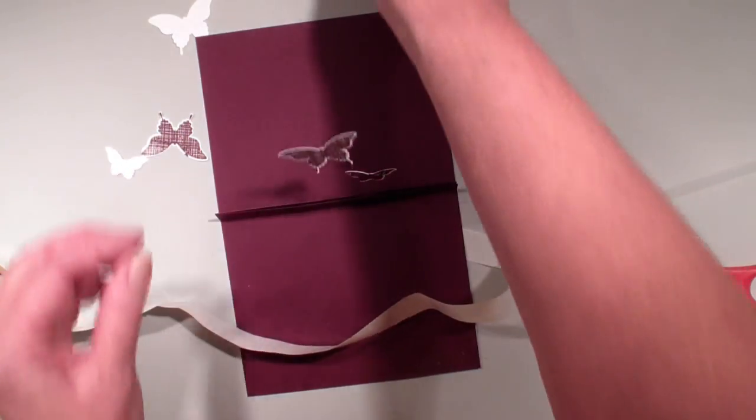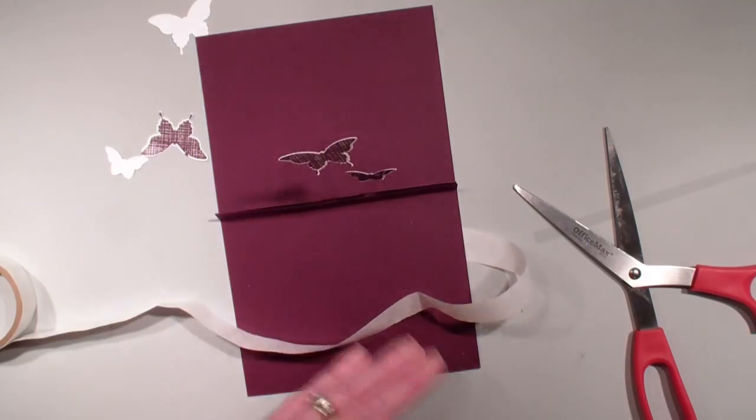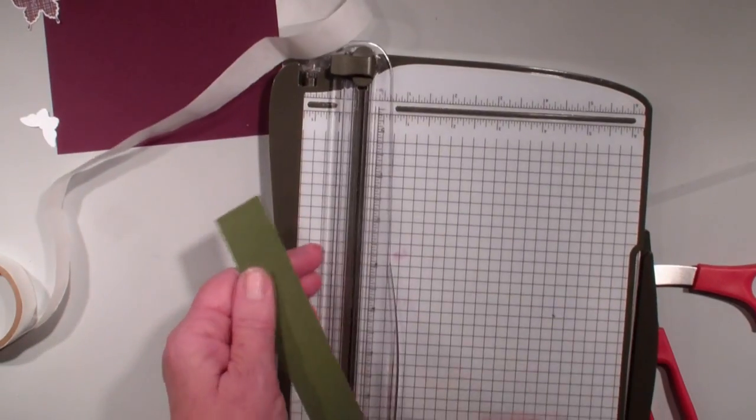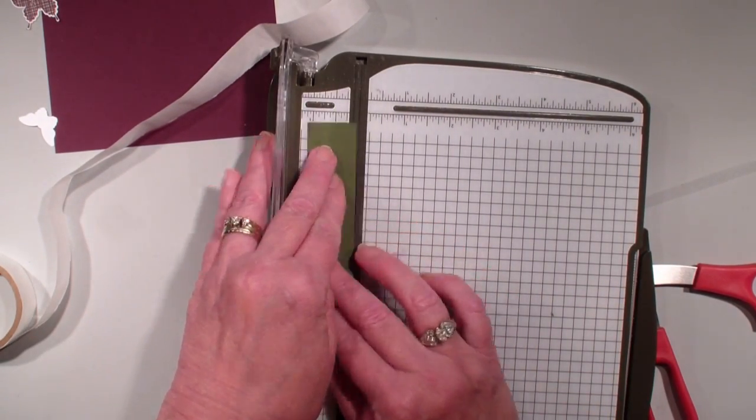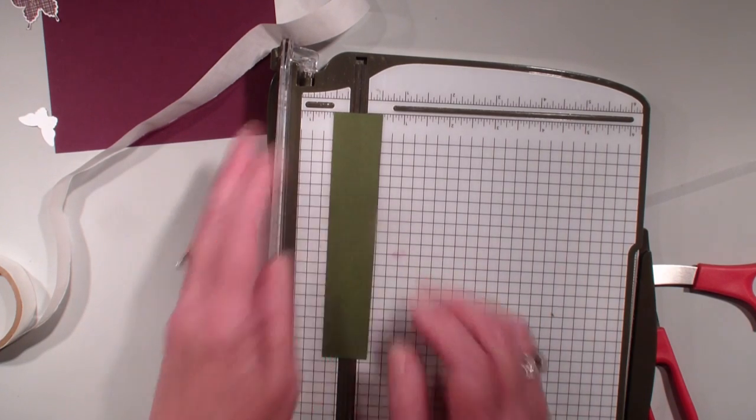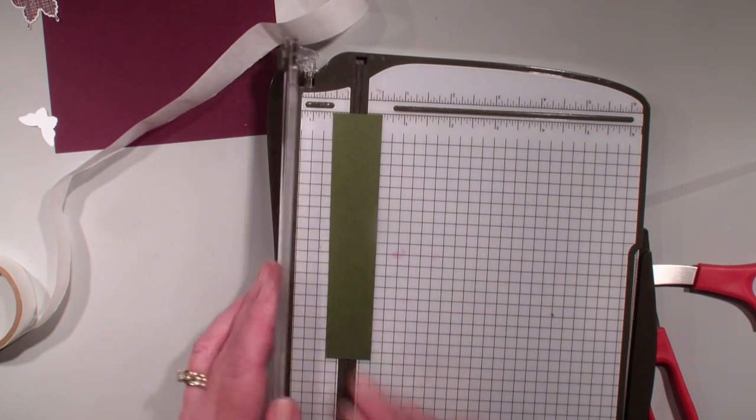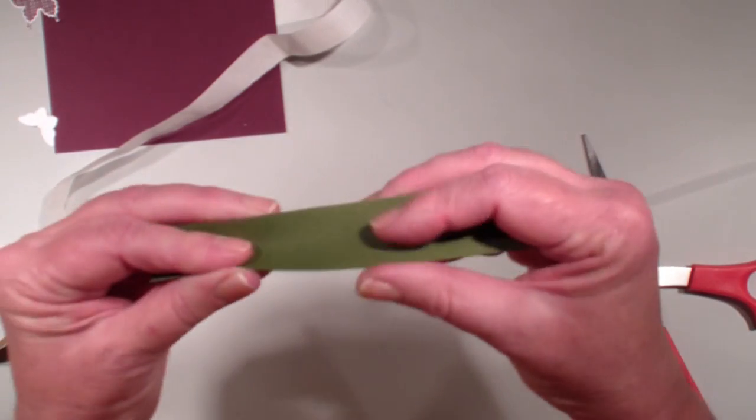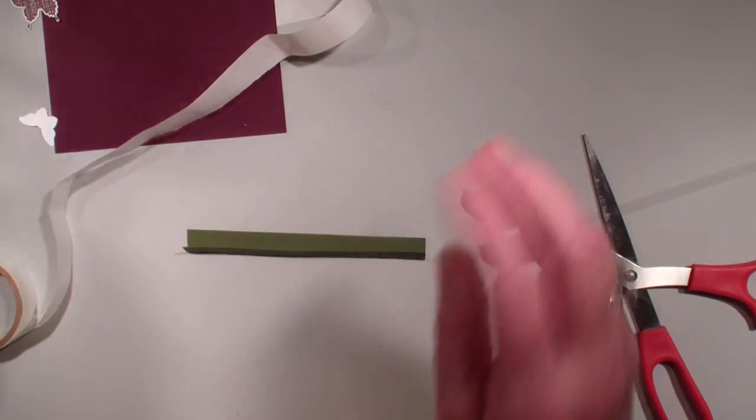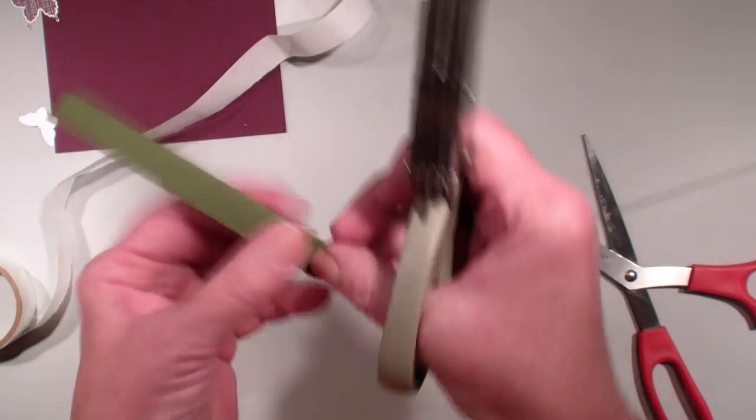And for the grass, I used a piece of Mossy Meadow. So this measures one inch by five and a half, and I'm just going to put that into my trimmer, score that in half, and then bring in my fringe scissors, and that's what I cut to make my grass.